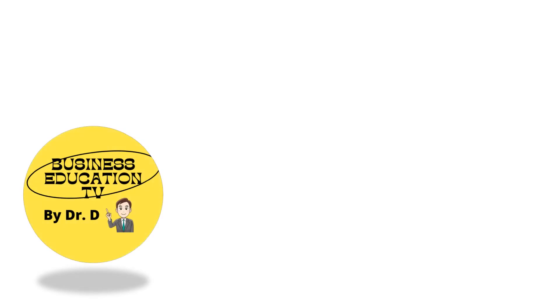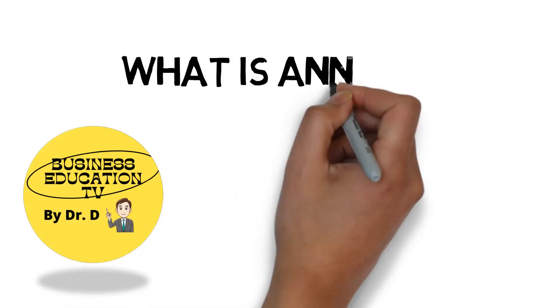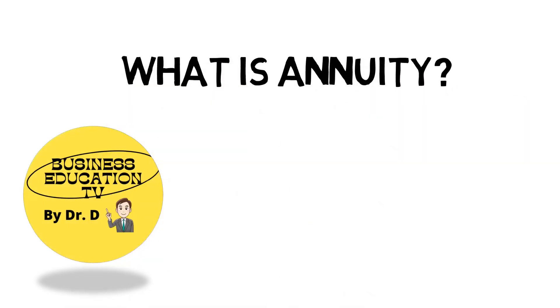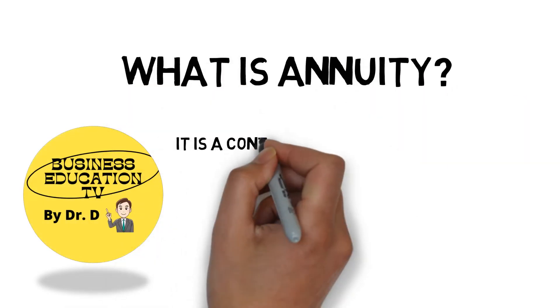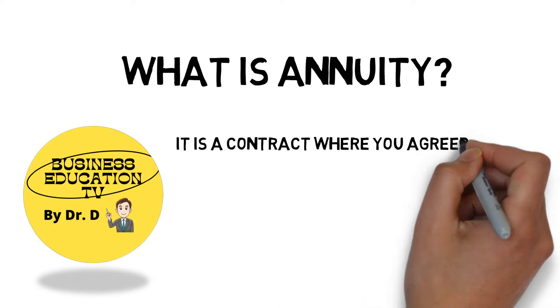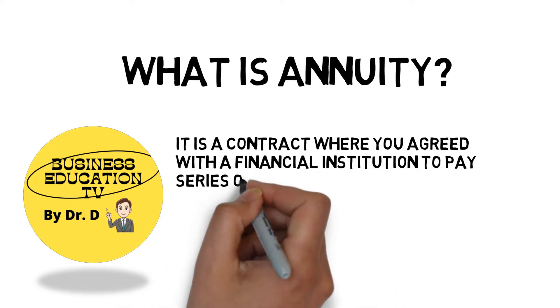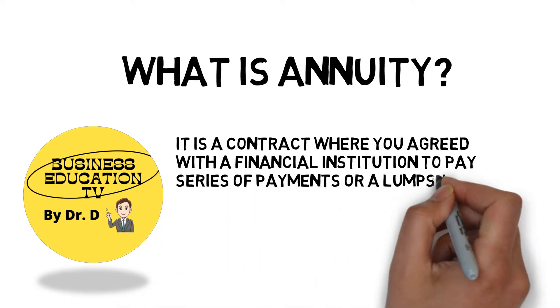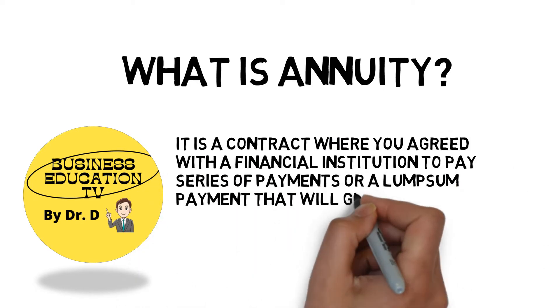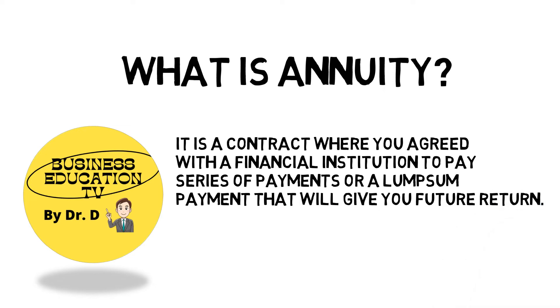Now, let's talk about what is annuity. It is a contract where you agreed with a financial institution to pay a series of payments or a lump sum payment that will give you future return.